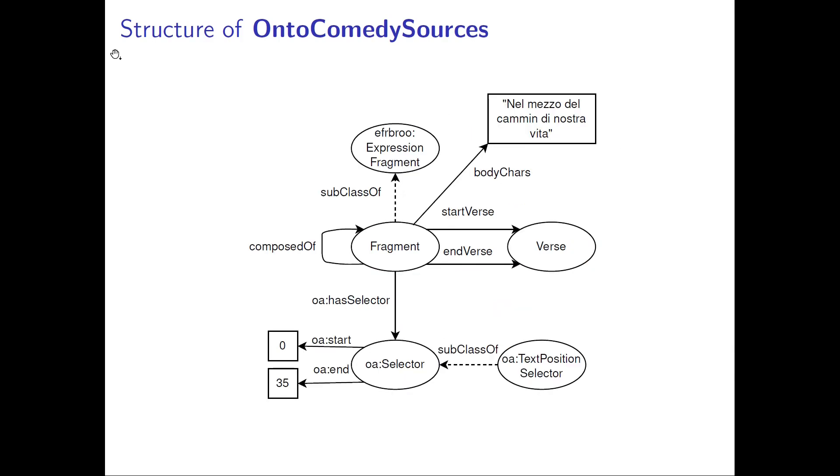The class fragment occupies a central role in the ontology, as each of its instances refers to a specific textual fragment of La Divina Commedia. Based on the class selector, we can make explicit the exact position of the corresponding fragment in the text. Every fragment has a starting verse and an ending verse. Furthermore, a fragment could even refer to smaller fragments within it. Such knowledge is represented through the properties start verse, end verse, and composed of.